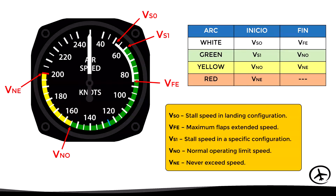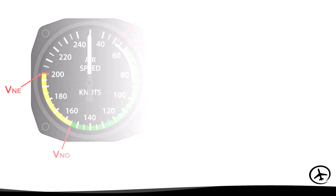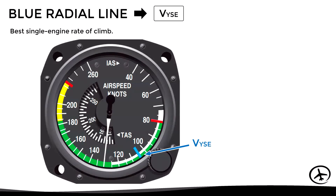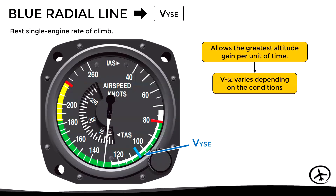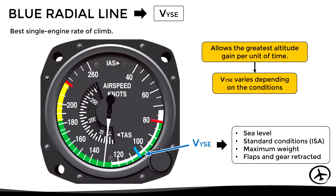In twin engine aircraft we find two additional markings. The first is the blue radial line representing VYSE — the best single-engine rate of climb speed. This speed allows the aircraft the highest gain of altitude per unit of time and is very important in case of an engine failure since performance is very limited. Note that VYSE does not have a fixed value; it varies with conditions. The blue line corresponds to the actual VYSE only at sea level standard conditions, maximum certified weight, and flaps retracted.